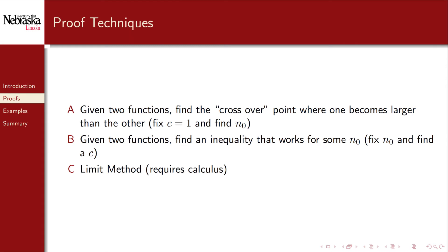Given two functions, how do we prove an asymptotic relationship between them? There are several techniques that we'll cover. The first technique involves finding a crossover point, after which one function will always be larger than the other. In terms of the definition, we fix the constant c and find the crossover point n0.